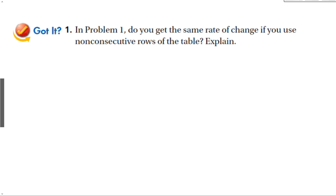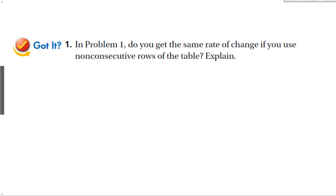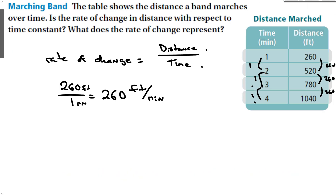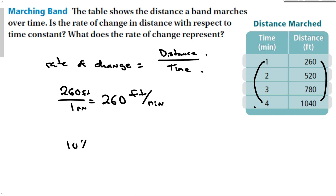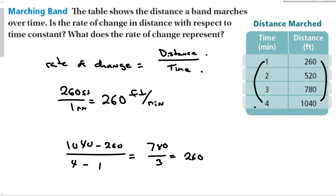Looking at our 'Got a Problem': do you get the same rate of change if you use non-consecutive rows? Yes, because we're just subtracting bigger numbers. Taking the first and last rows: (1040 − 260) over (4 − 1) = 780 over 3 = 260. No matter which two rows we use to calculate the rate of change, it is always the same — it is constant.